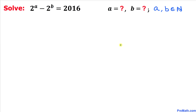Welcome to pre-math. In this video we are going to solve this given exponential equation: 2 power a minus 2 power b equals to 2016, where a and b are natural numbers.